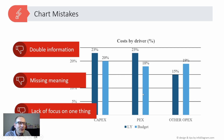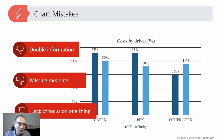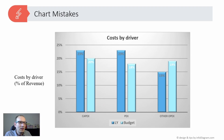The third mistake I see a lot is the lack of focus on one thing. If there are too many visually important elements on a slide or chart, it's not very effective. It's better to focus attention on one point — the most critical one, or the point you want your reader to look at.